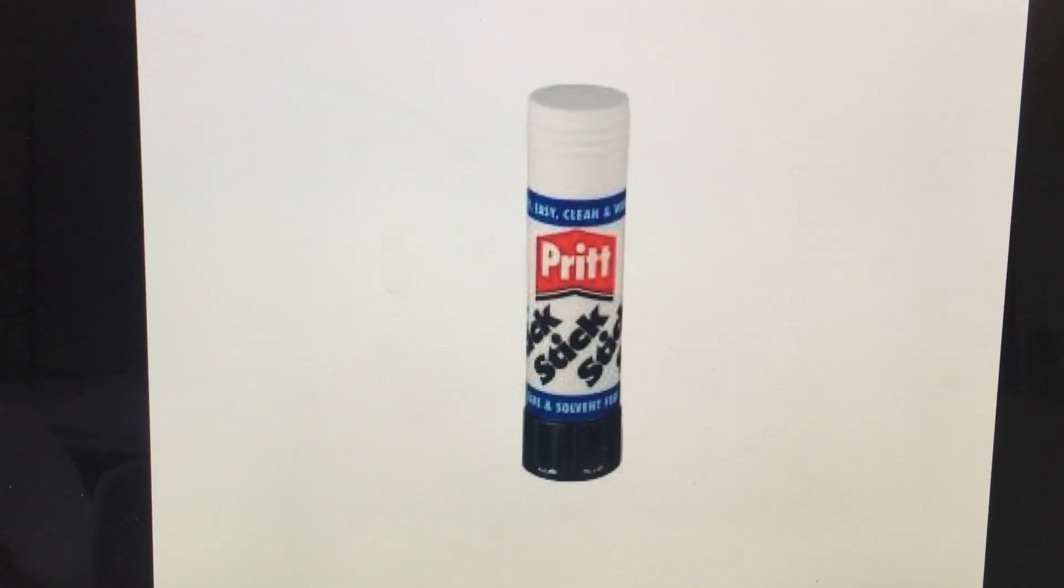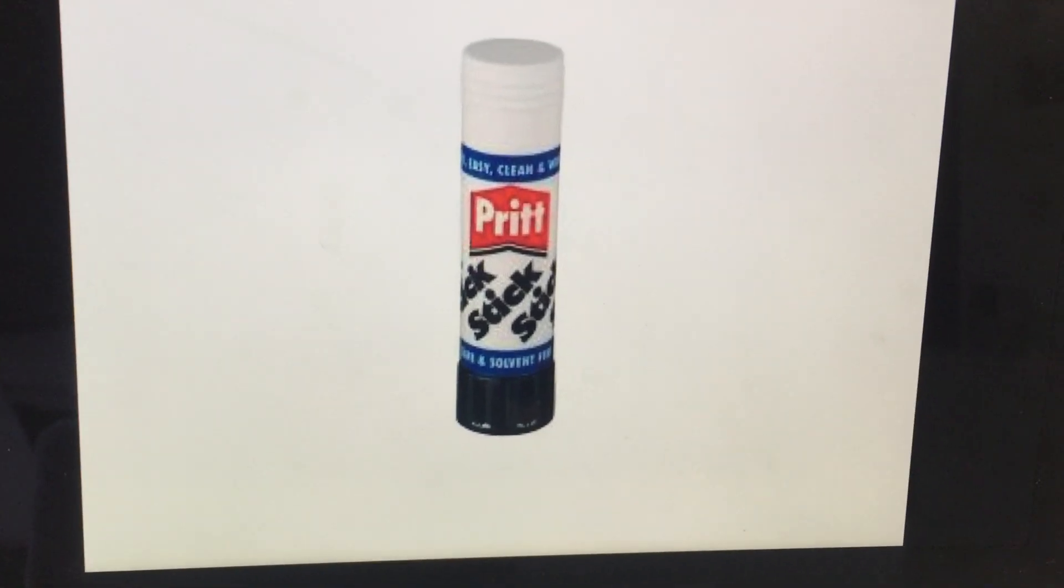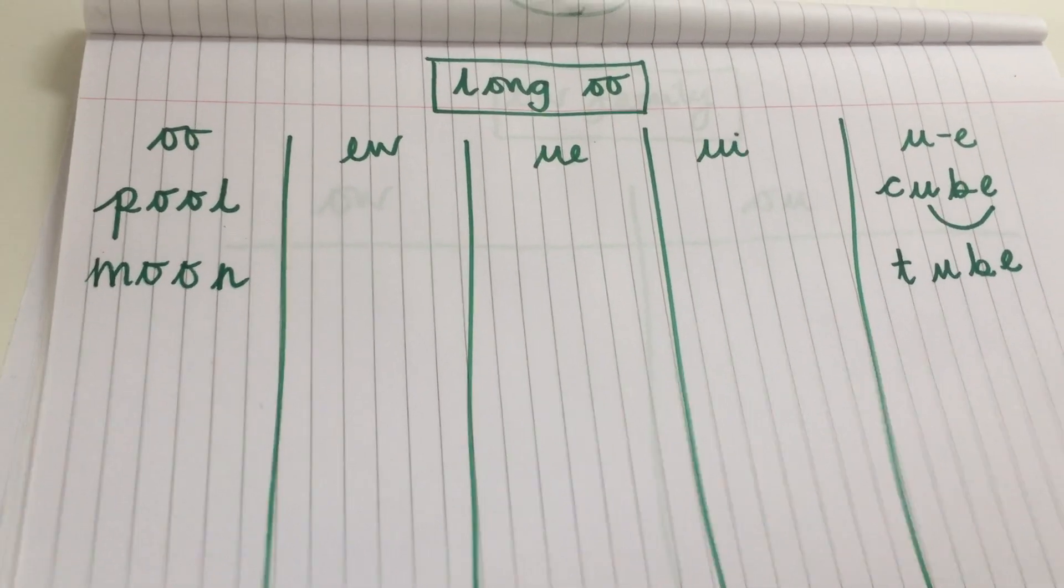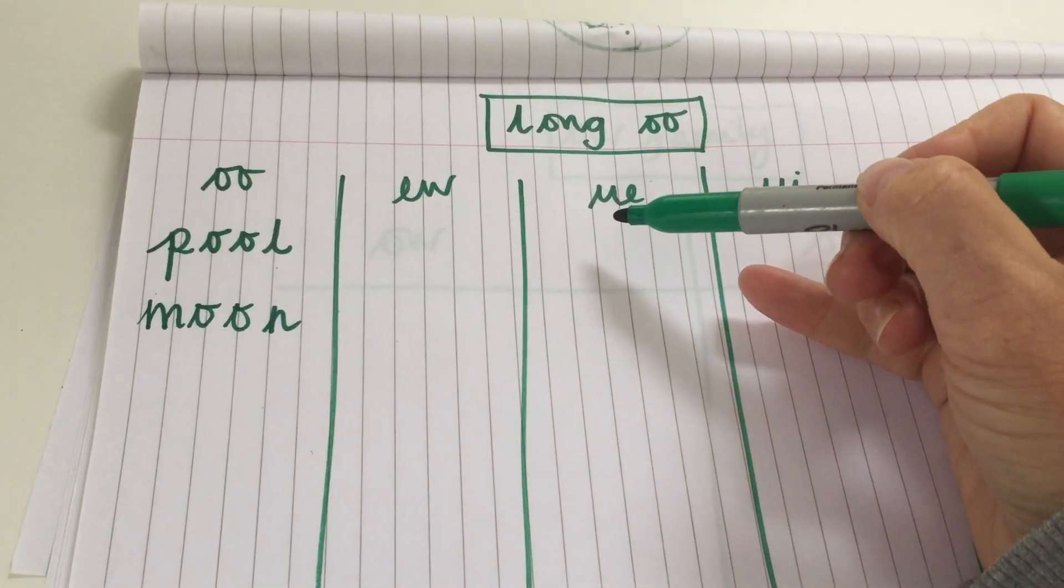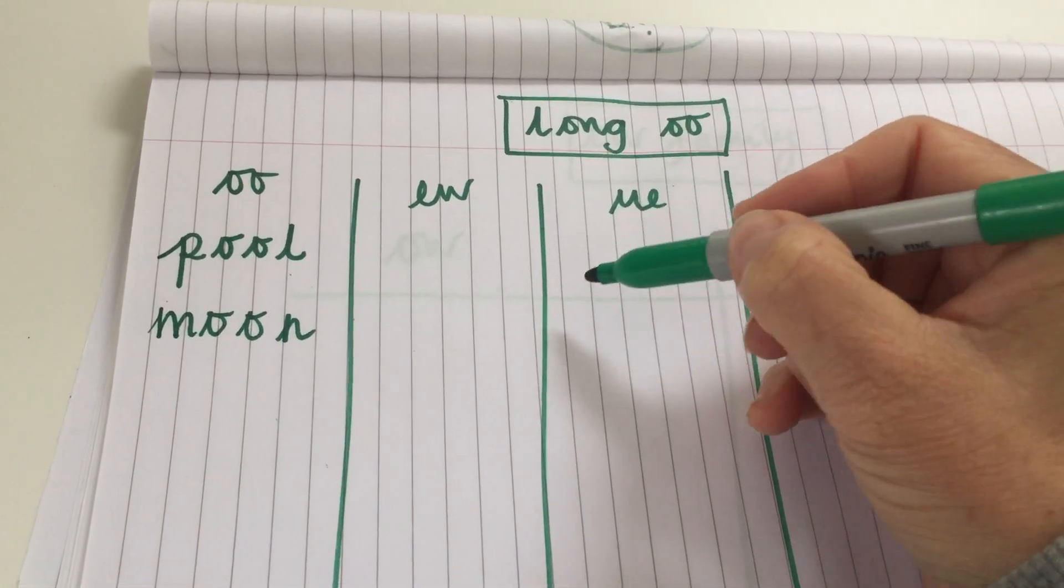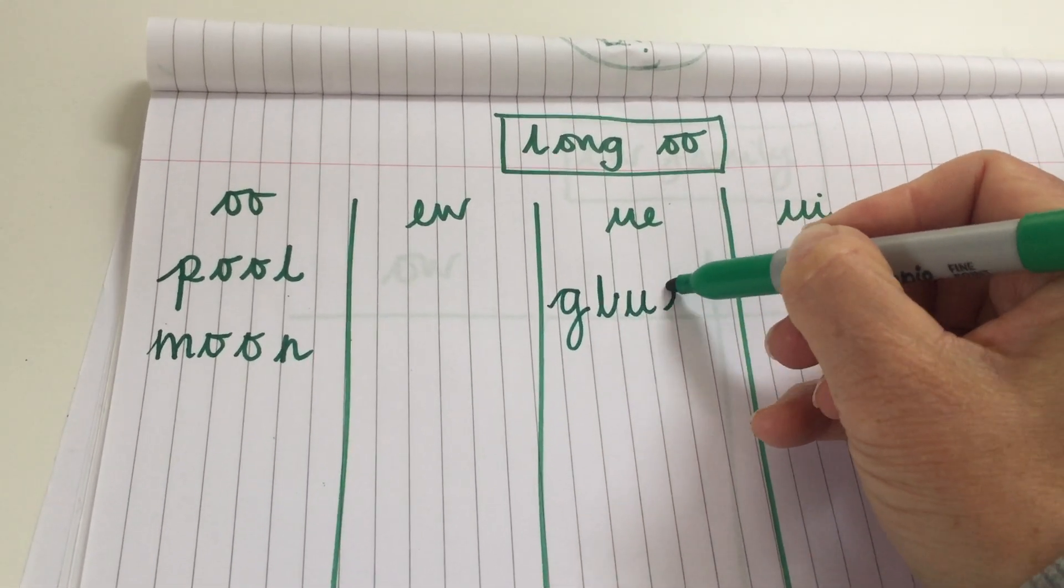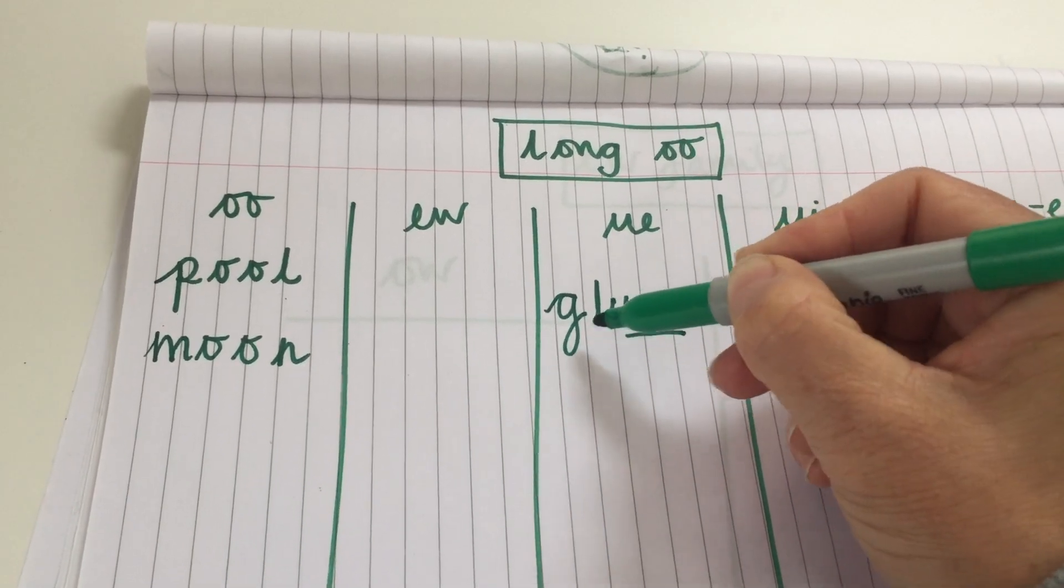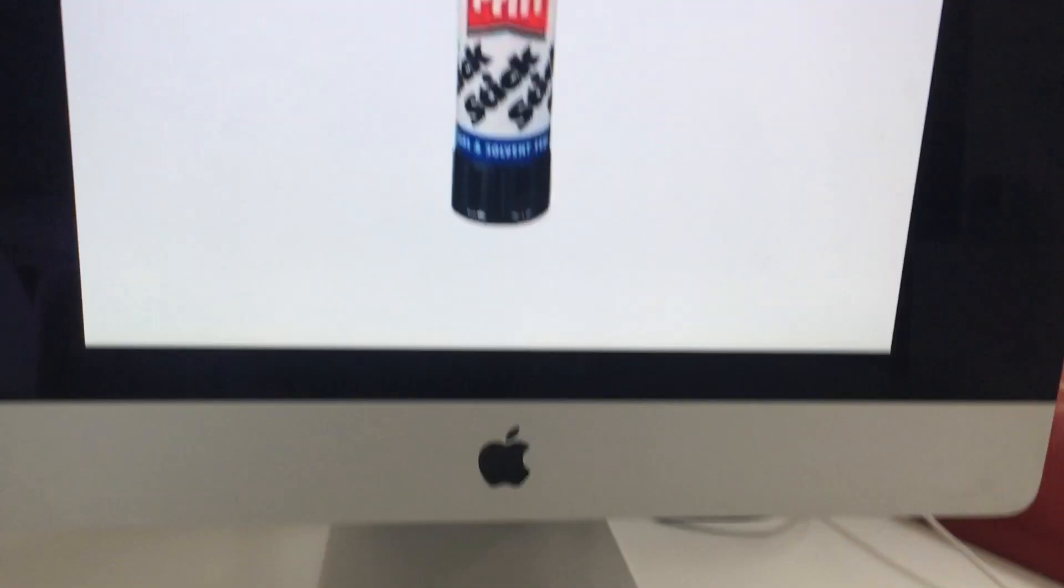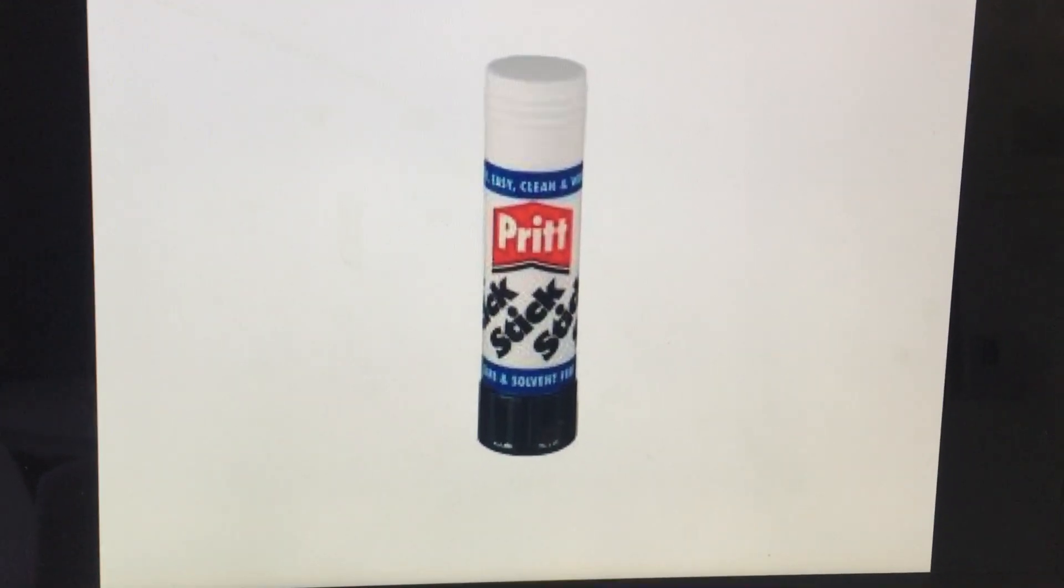Some glue. G, L, oo. We've got the oo sound. But actually in glue, it's made by the U and the E digraph. G, L, oo. Can you see? L, oo. Well done. Can add that one to the list, the glue.